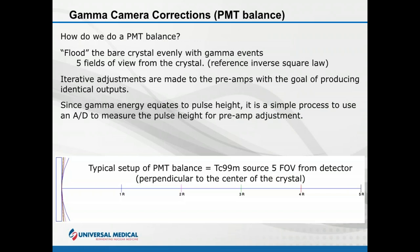On some older systems, PMT balance might require total manual adjustment — physically adjusting every photomultiplier tube. On modern cameras it is done via computer control. The process floods the bare crystal and the computer measures pulse height via an A-to-D converter, making iterative adjustments to the preamp until all outputs are equalized.